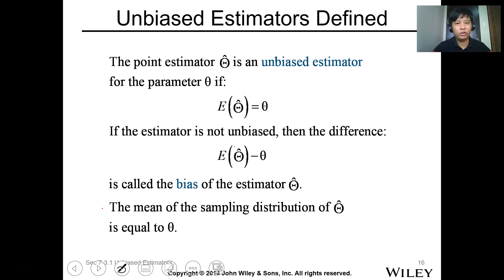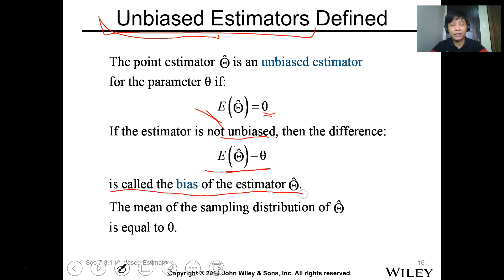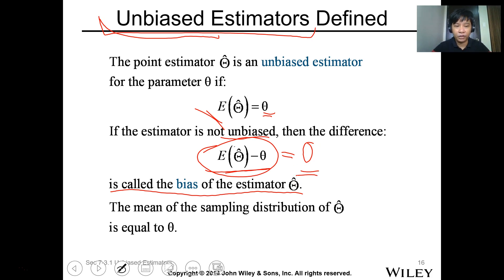For sampling distribution, we always want our statistics to be unbiased, meaning our estimator will be unbiased. The point estimator theta-hat is an unbiased estimator for the parameter theta if the expected value of theta-hat equals theta. If the estimator is unbiased, the bias — which is the difference — should be zero. So the mean of the sampling distribution of theta-hat equals theta.